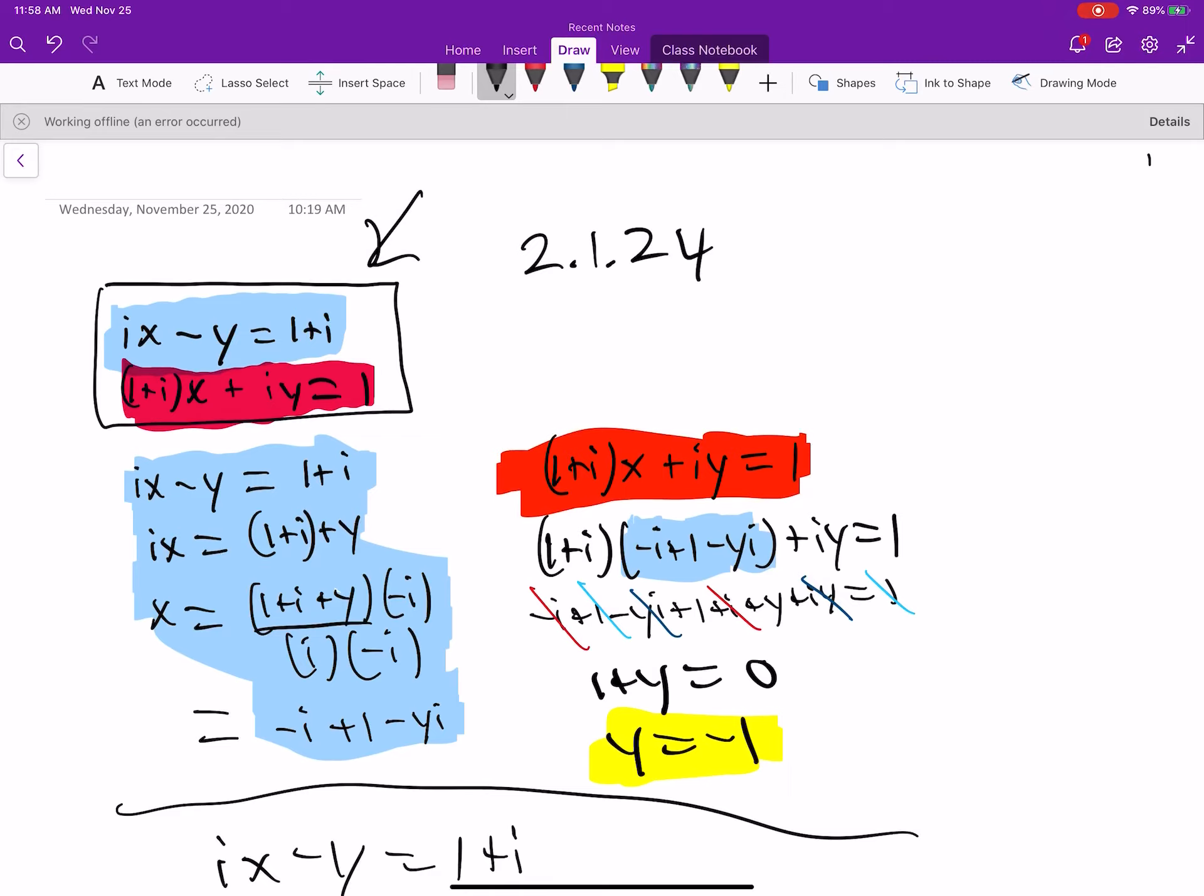If we isolate x, we end up with negative i plus 1 minus yi, and that's just using precalculus stuff. Then I take the red equation here and substitute in what I know for x.